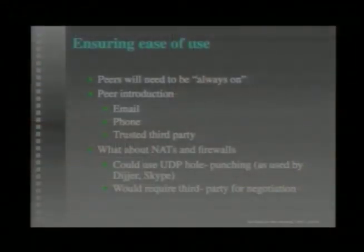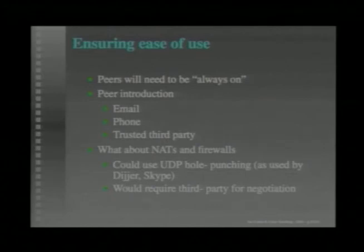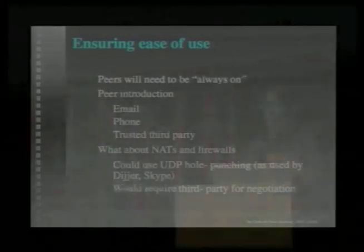The issue with NAT circumvention is that it does require a third party in order to negotiate this direct connection. But that third party can be pretty much anyone in the network that's not behind a NAT or a firewall. So it doesn't need to be a single centralized third party — it can be anyone else in the network.